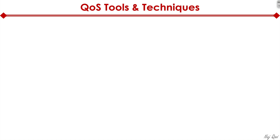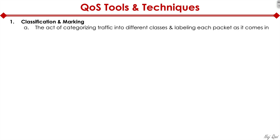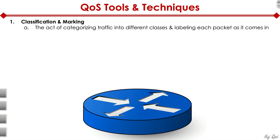Now let's shift to QoS tools and techniques. The first one is classification and marking — the act of categorizing traffic into different classes and putting labels on each packet as it enters the network. For example, I have a router, and packets come in. We categorize those packets and put labels on them — you can see blue, orange, yellow, green.